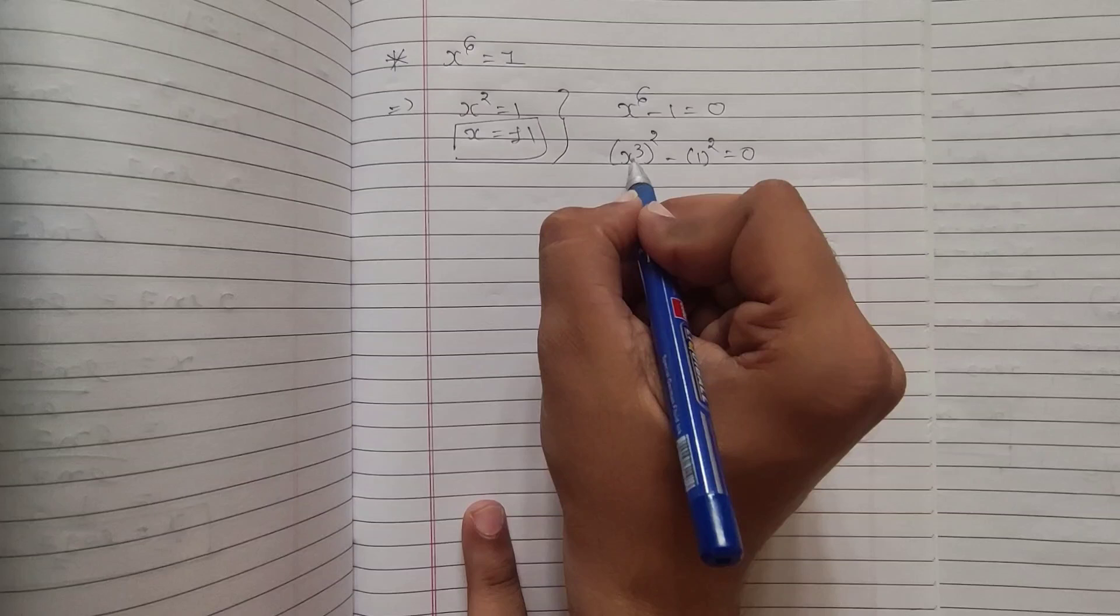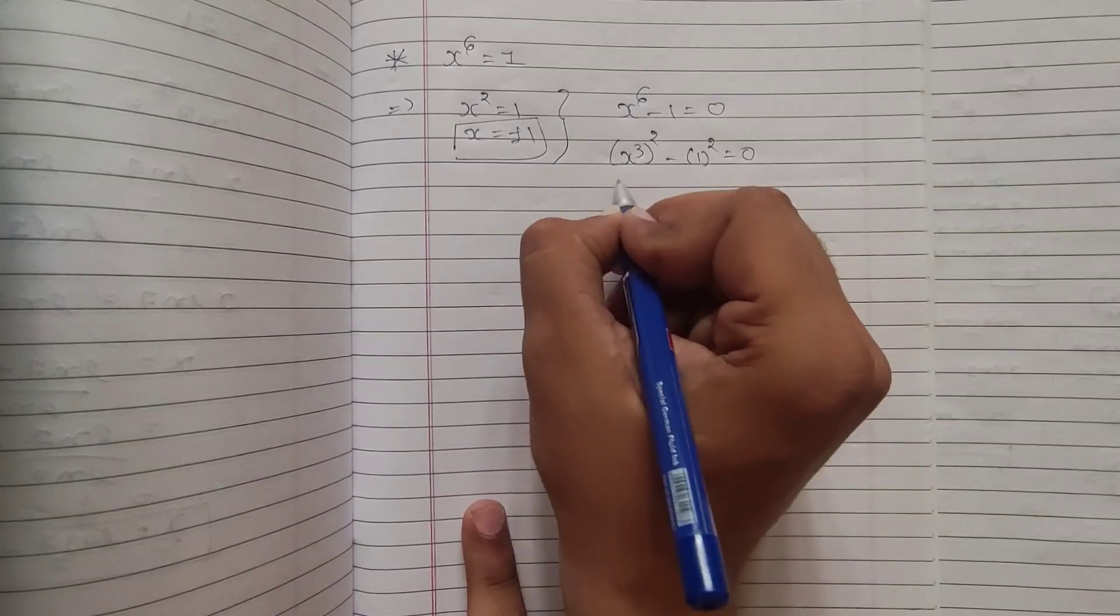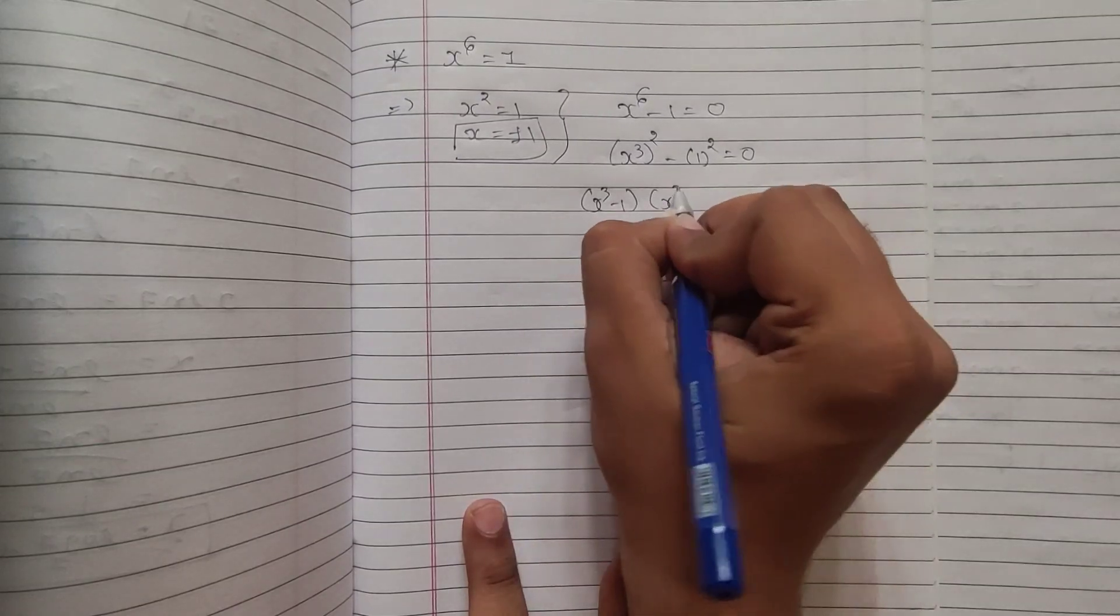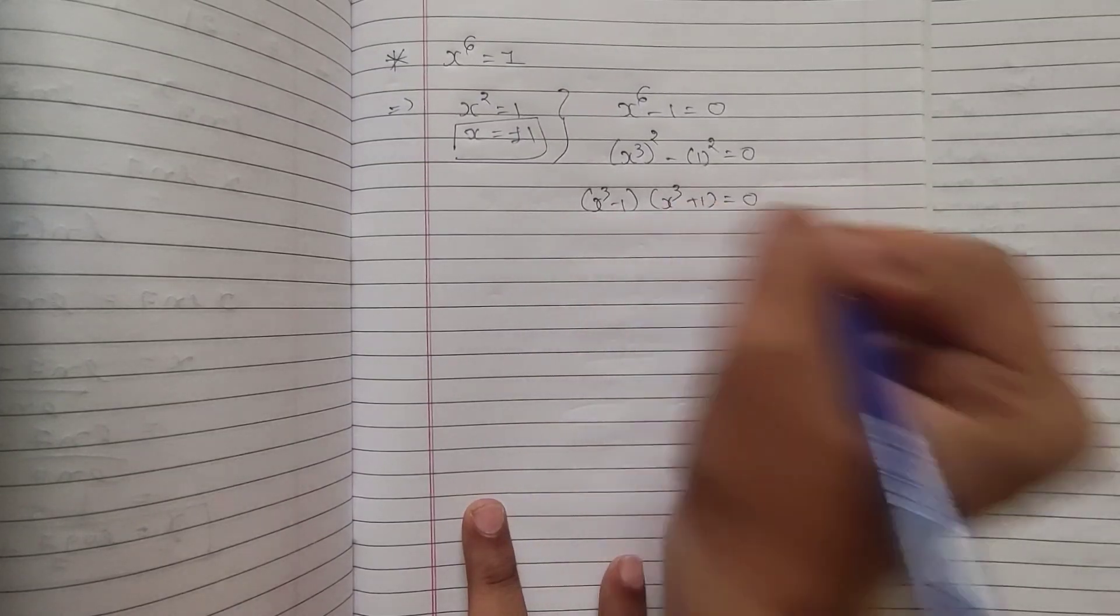Now, here I can apply property a squared minus b squared, which means a minus b into a plus b. So, x cube minus 1 into x cube plus 1 equal to 0.